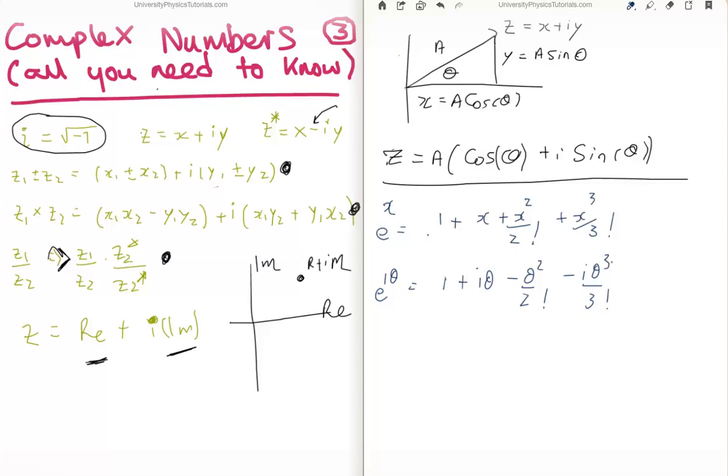Alright, now the trick here is to group the complex and the real components together. So we're going to get the following that e to the i theta is real components plus imaginary components. And we get our imaginary components next. OK, now what's interesting here is if you actually look at this, if you look at the Taylor expansions of both cosine and sine, you'll find that this is the Taylor expansion of cosine and this is the Taylor expansion of sine.